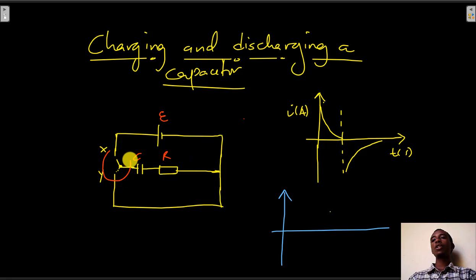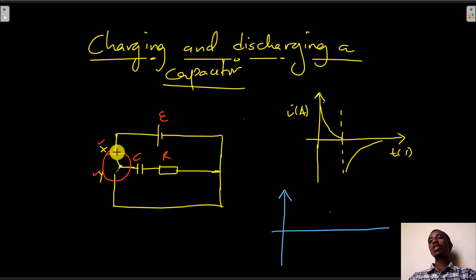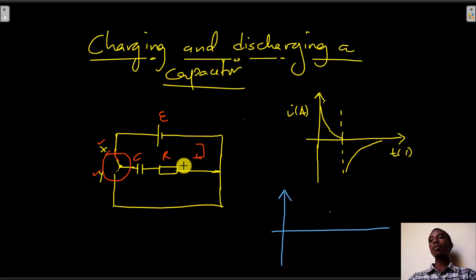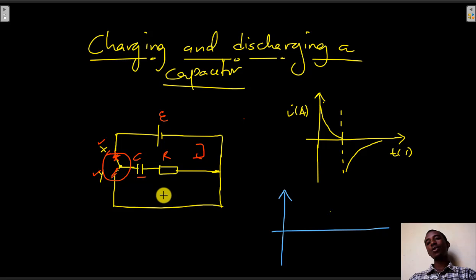I have a double contact switch with terminals X and Y. Every time I connect the switch to terminal X, the upper circuit is active and current flows through the circuit. The lower circuit is not activated, so the capacitor is connected to the battery and the upper CR circuit serves as the charging circuit. If I connect to terminal Y instead, the lower CR circuit is active, with no source of EMF, so the capacitor supplies the current and is discharging.